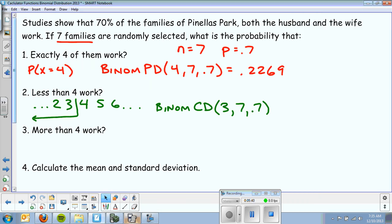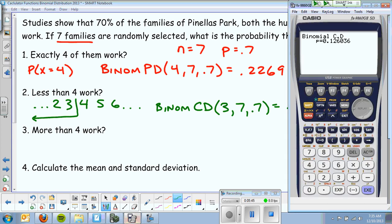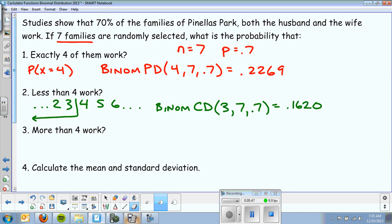So that is 0.1260. And that's essentially the probability of 0 families plus 1 family plus 2 plus 3. But instead of separately calculating all those and adding them up, it does it instantly, which is very beneficial.